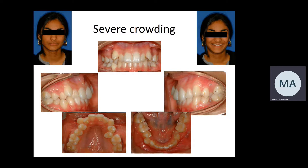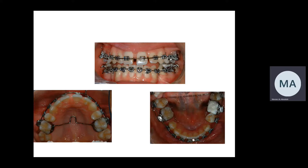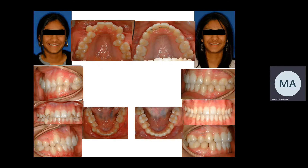For severe crowding, not only extraction is necessary but also reinforcement of anchorage. Reinforced anchorage means using headgear, mini screws, transpalatal arch, lingual arch, or other special anchorage devices. For this patient, four premolars were extracted, a transpalatal arch was used, teeth were aligned and leveled, central lines were corrected, and we ended up with a class 1 occlusion — a case of severe crowding successfully treated.